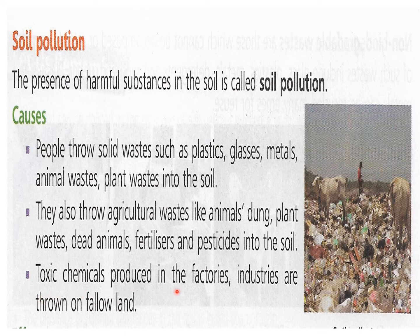Toxic chemicals produced in the factories and industries are thrown on fallow land. Fallow land means an empty plot or any empty land found near the factories or industries. They throw all the toxic chemicals there which are produced in the factories.